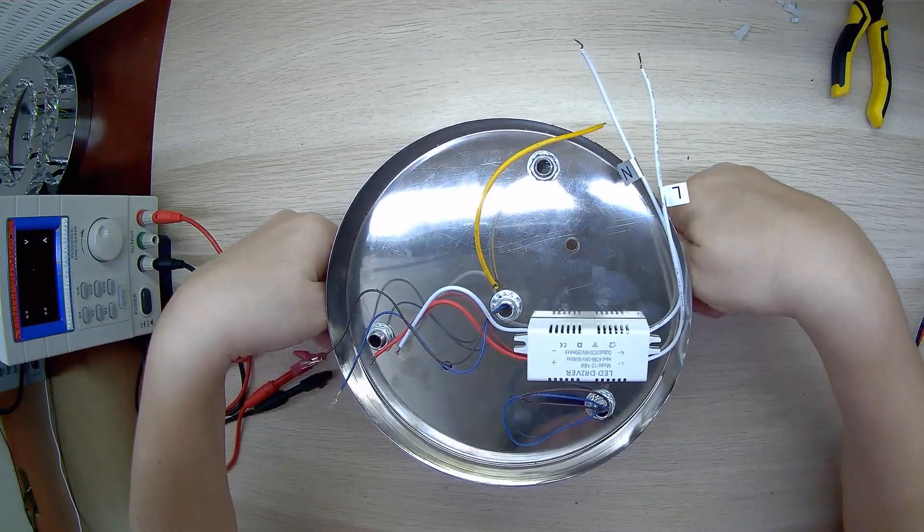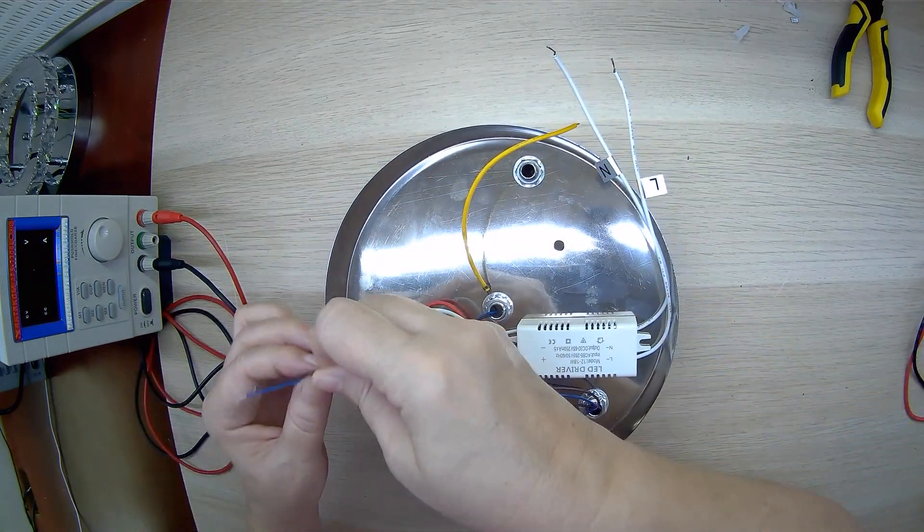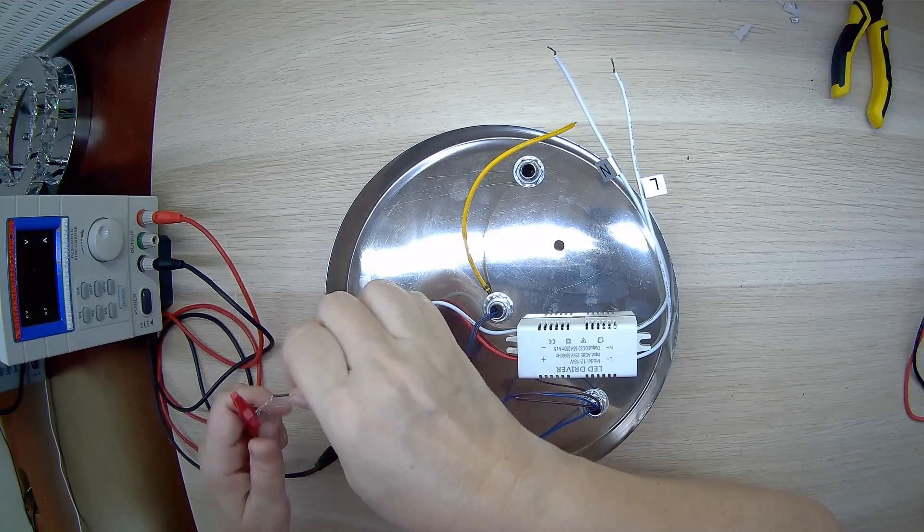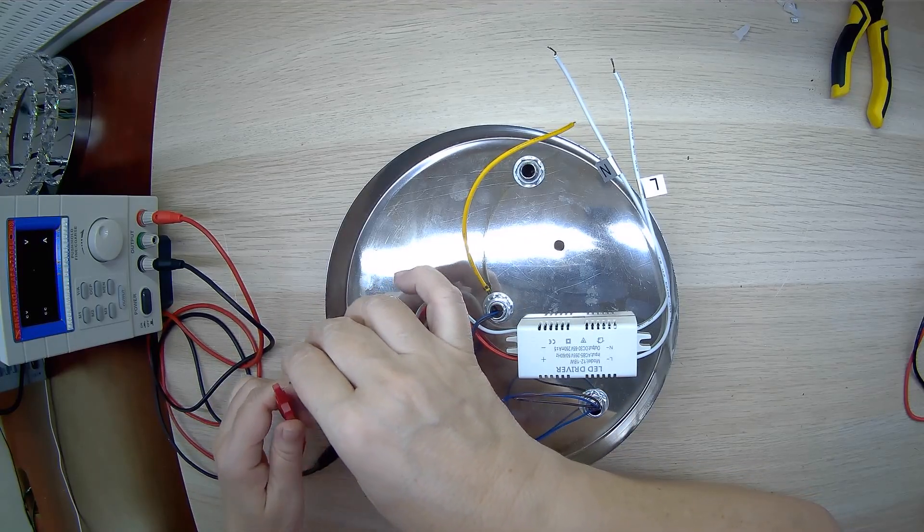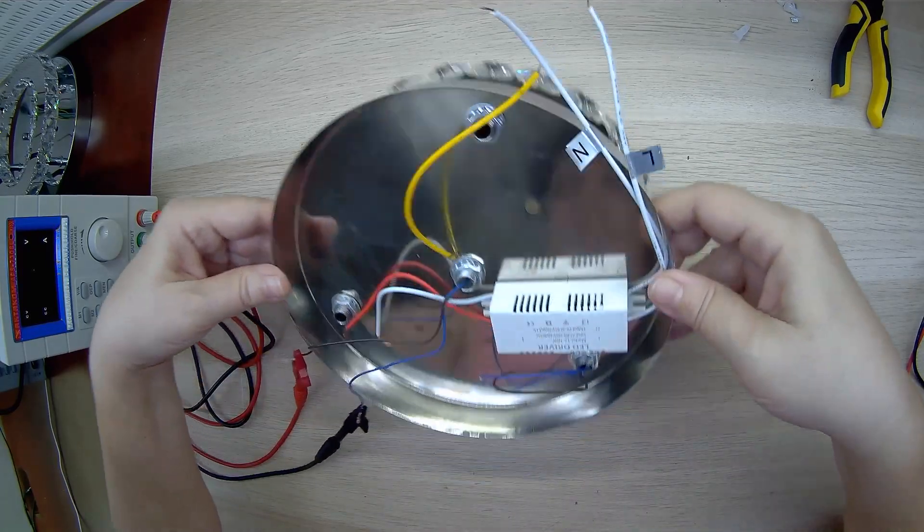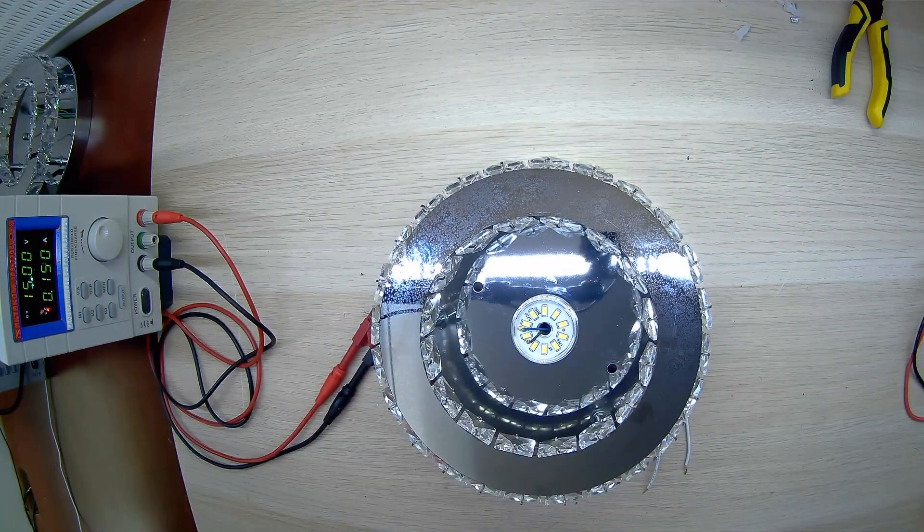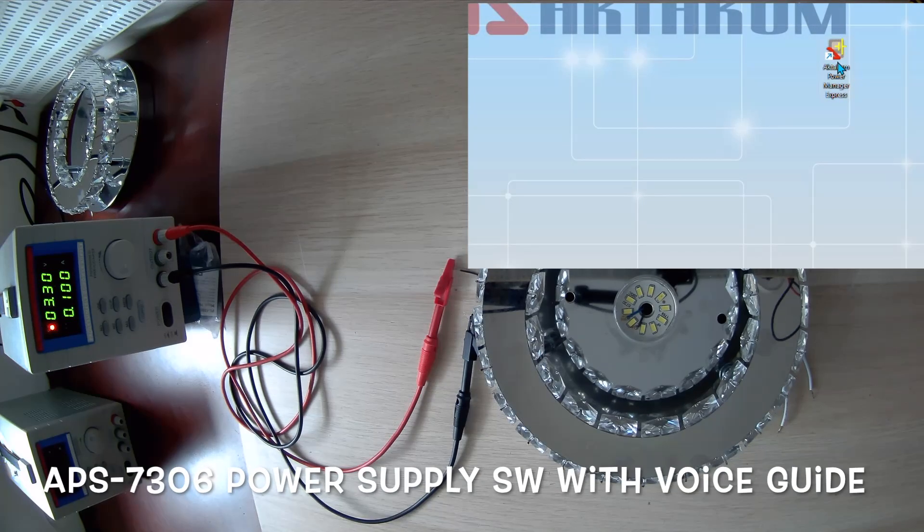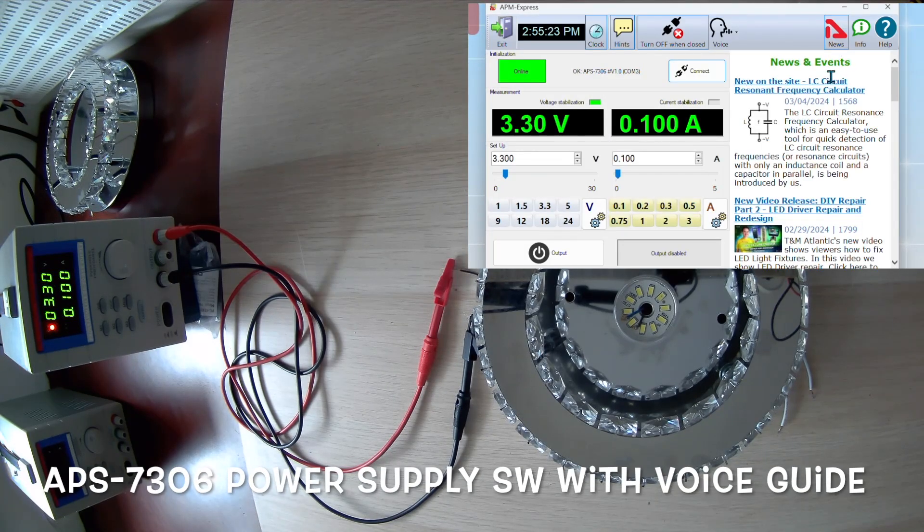Knowing the parameters for powering the section, we will connect our Octacom APS7306 laboratory power supply. It is controlled remotely from a computer, which is very convenient for our tests. In the previous video, the link is in the upper corner, we explain how this power supply can be used to check the LED strip.